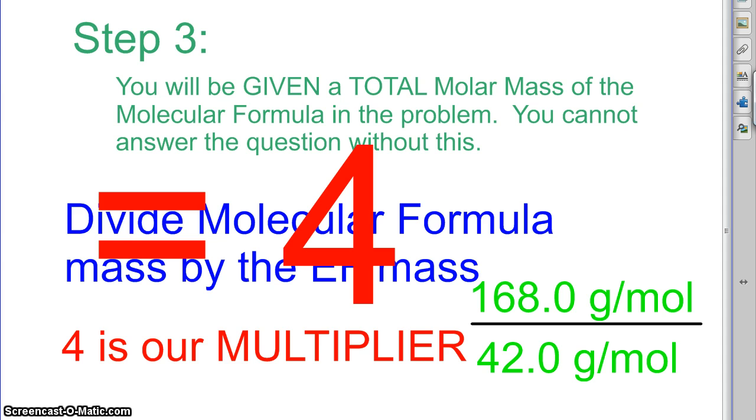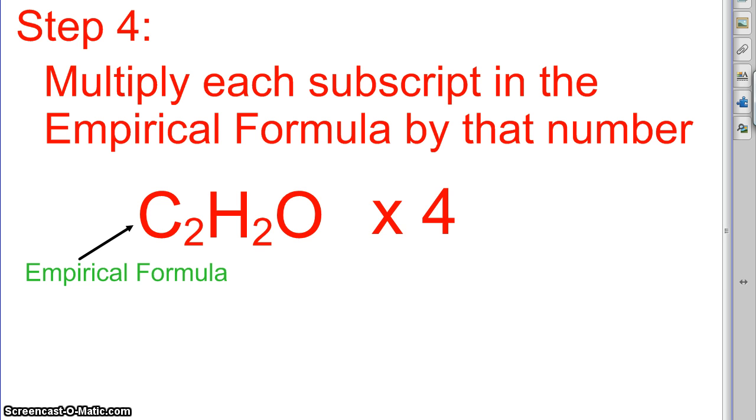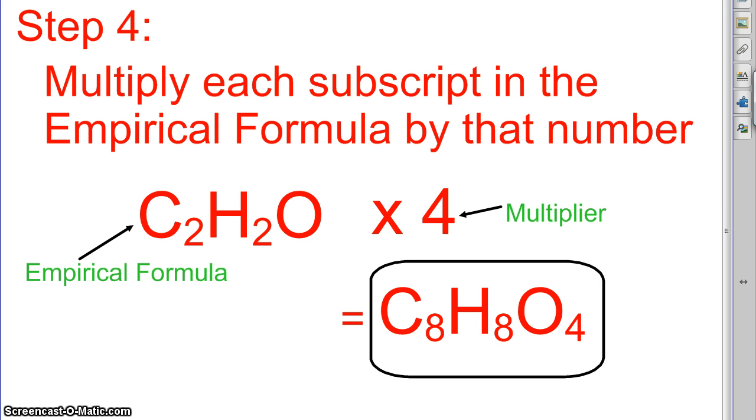That tells us how many times we've got to multiply each subscript. So if we go back here, we've got to multiply each subscript in the empirical formula by that multiplier number that we just came up with. So this is our empirical formula, C2H2O. So we've got to take that times 4, we've got to now take 4 times 2 Cs, 4 times 2 Hs, 4 times 1 O gives us C8H8O4, and that is our molecular formula.